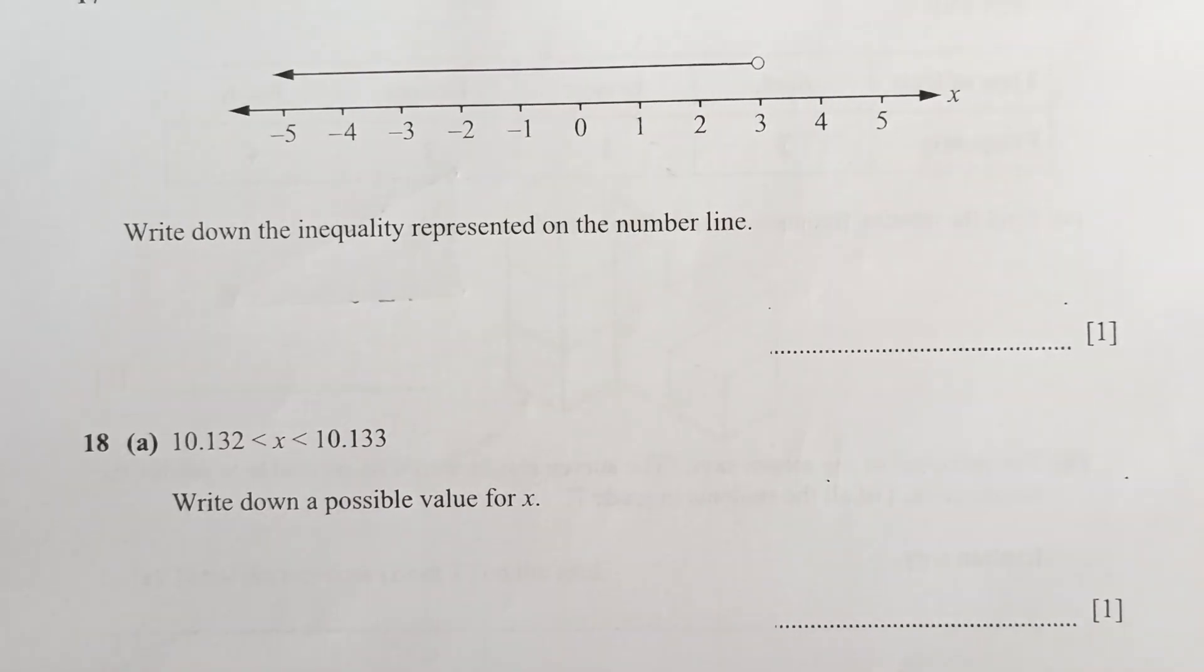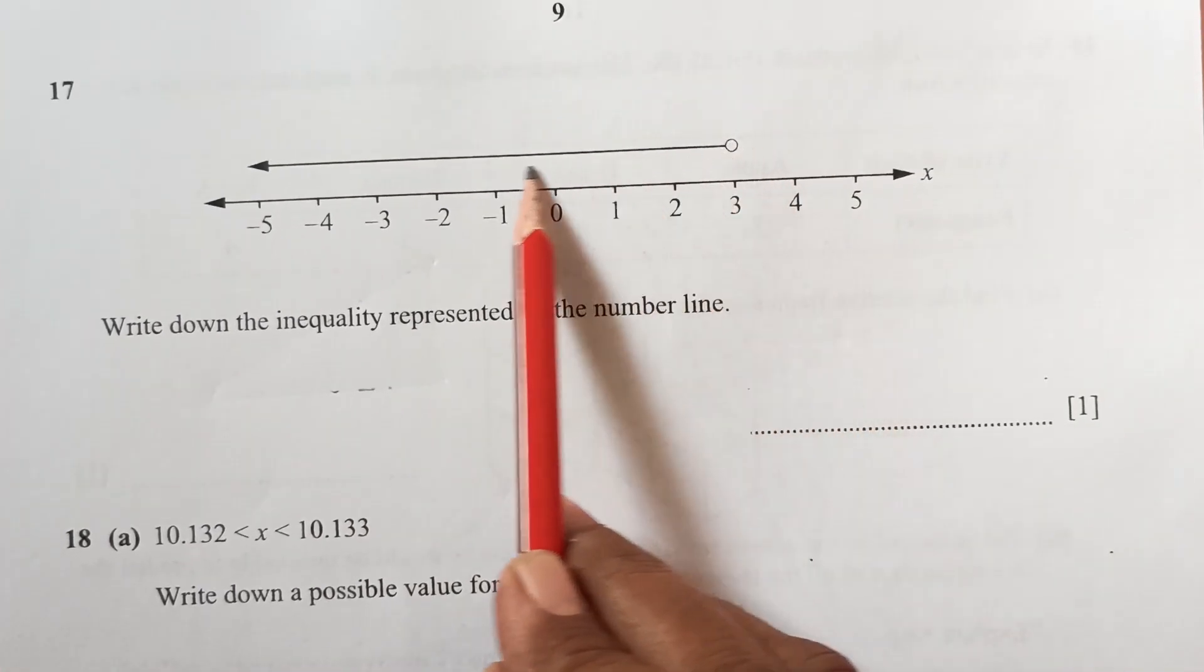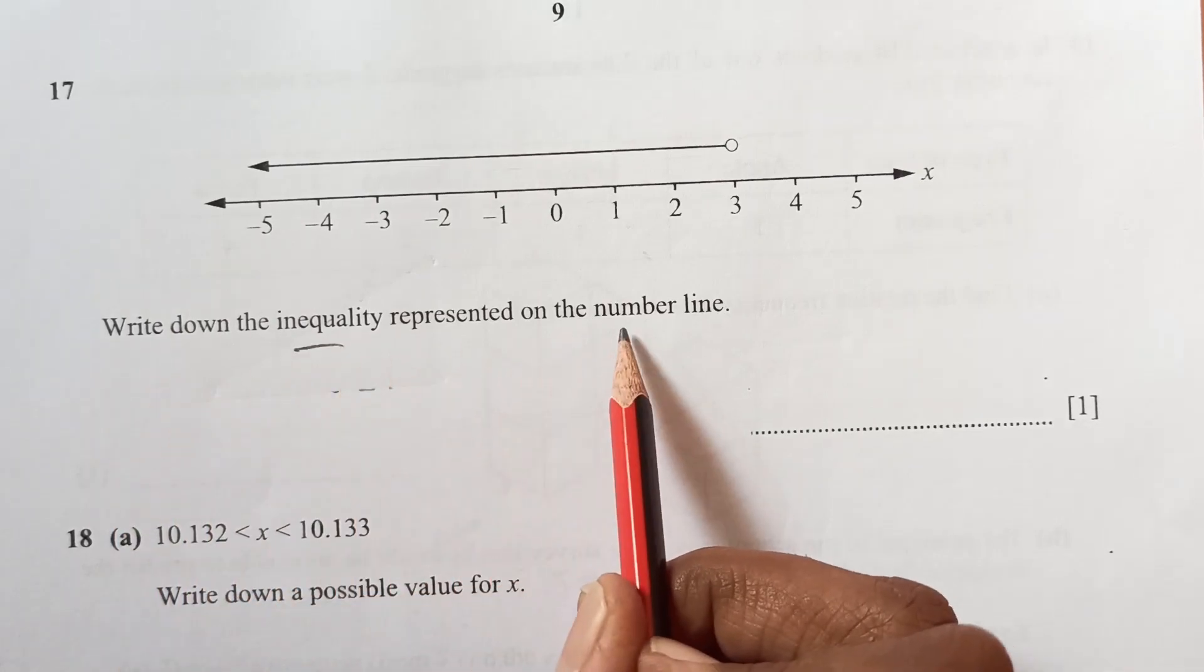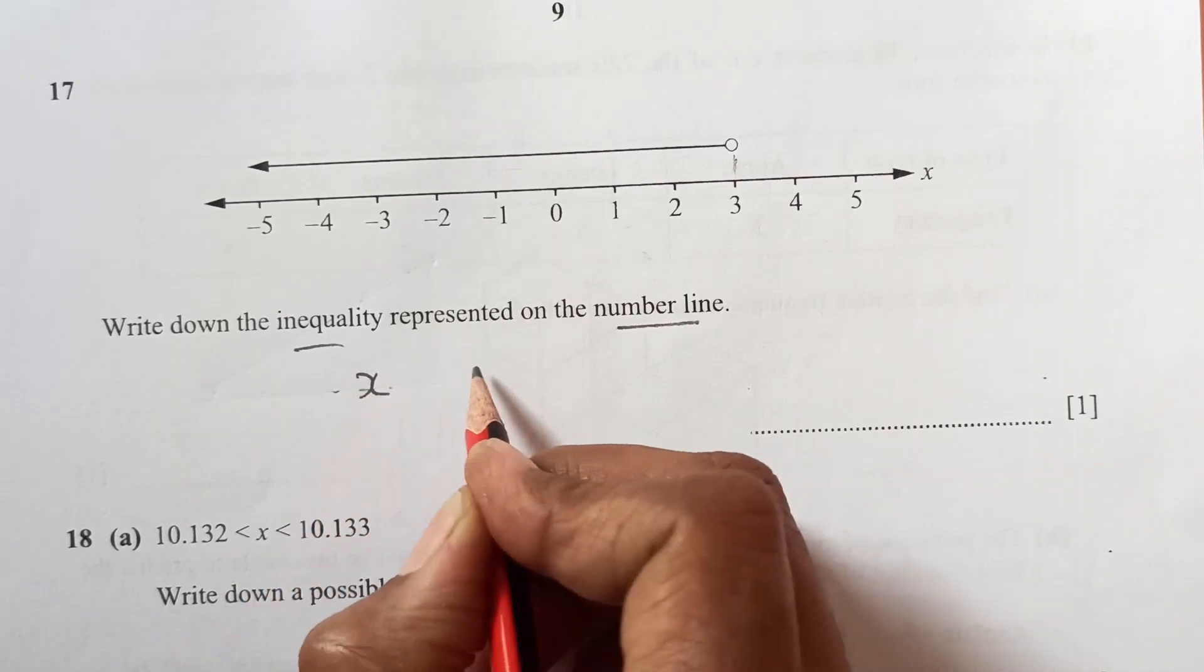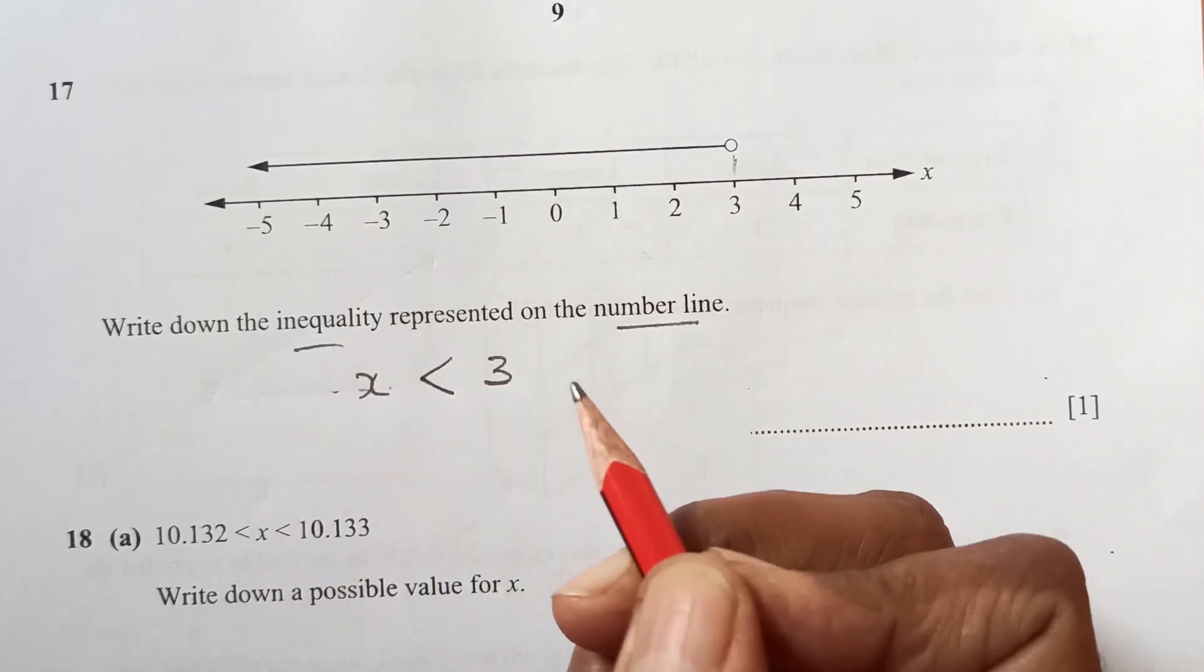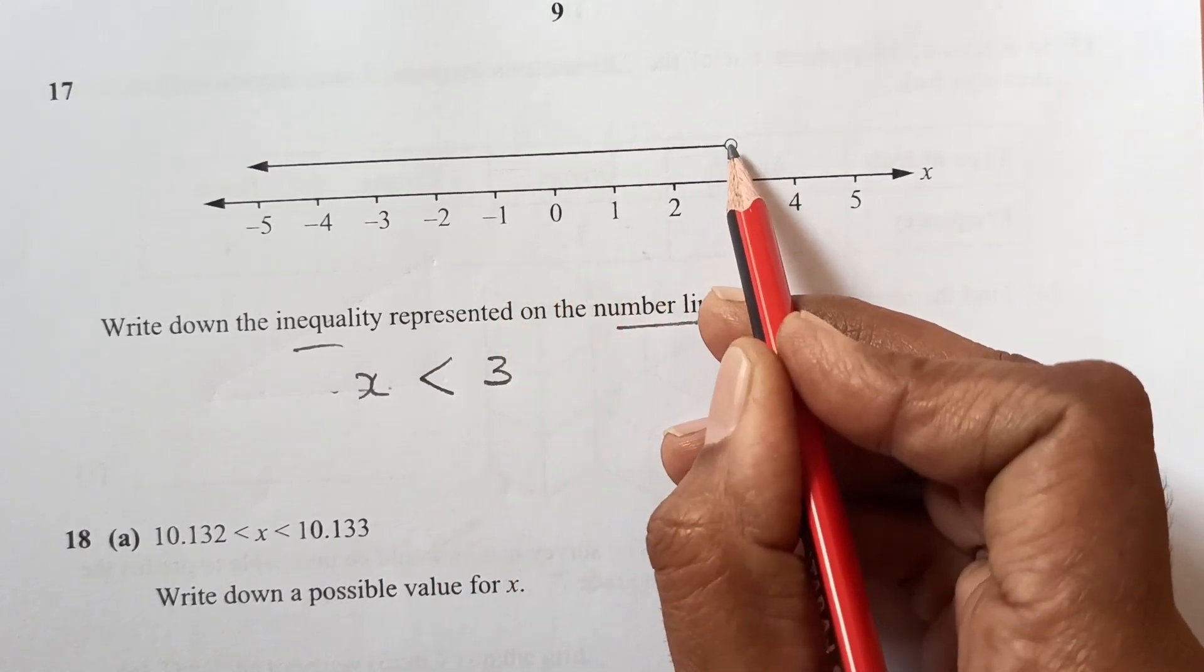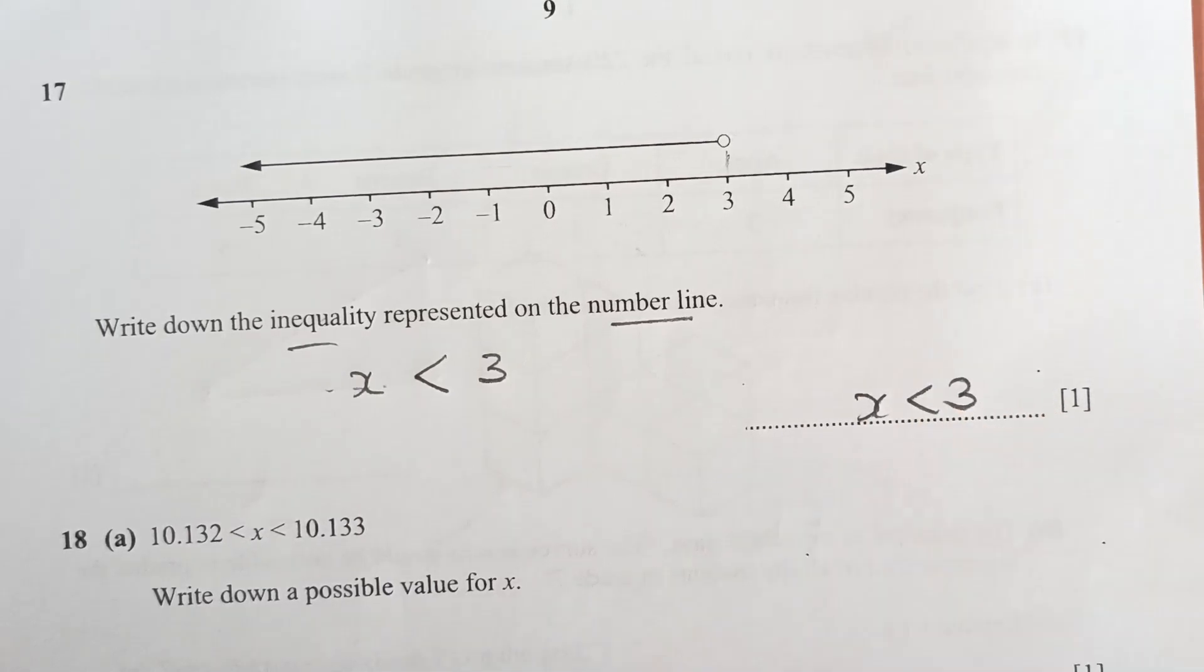Question 17. We have a number line here. You can see this is a hollow circle here and left hand side is our number. Write down the inequality represented on a number line. This is 3. So that is x and 3. But it is less than. We will write down less than, but no equal sign because this point is not, circle is not shaded. So this will just be x less than 3.